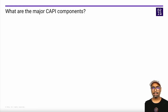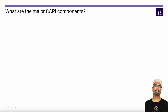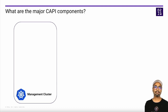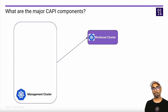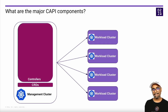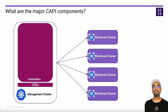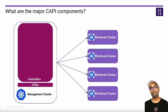Now that we understand what CAPI is and why we should be using it, let's talk about the major components that bring it to life. CAPI requires a working kubectl-accessible Kubernetes cluster to host the CRDs and the controllers. A typical CAPI architecture consists of a management Kubernetes cluster where the CAPI components reside and one or more workload clusters that are deployed using it. To get started, this management cluster could be any lightweight Kubernetes cluster, even something running on your desktop like a kind cluster.